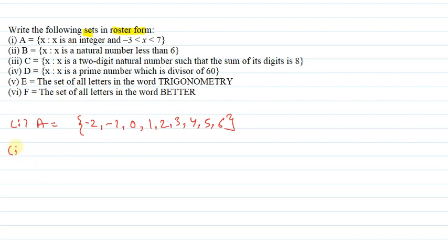Now we have the second part of this question. We have set B. What is said in set B? Set B is: x is a natural number less than 6. In this question, we have a natural number and less than 6. So when we have natural numbers, they start from 1, 2, 3, 4, 5. And since we have less than 6, we will not take 6. So it will be only 5. So this will represent it in roster form.